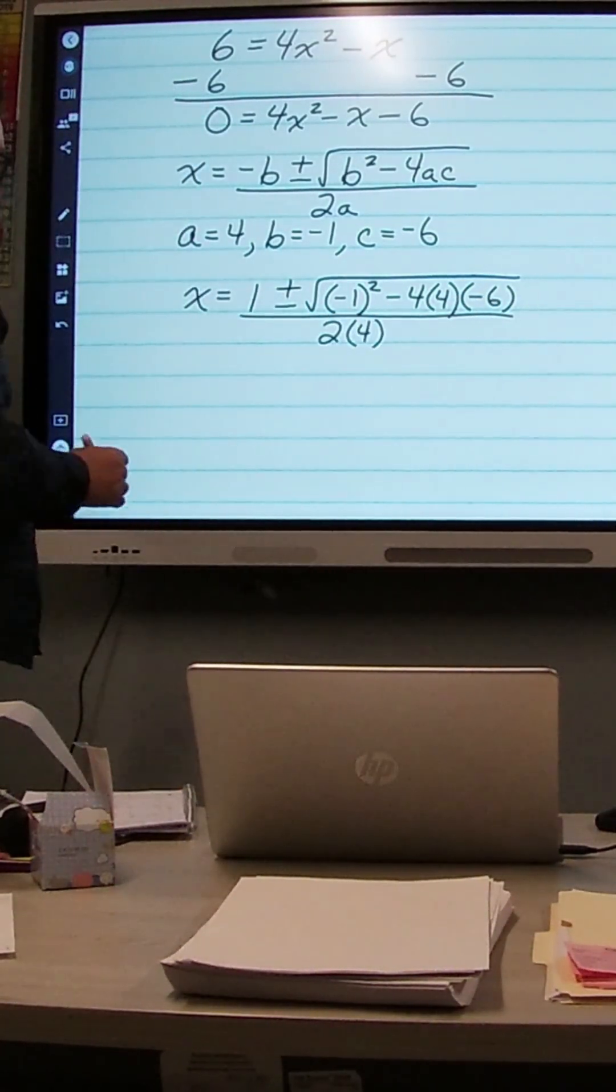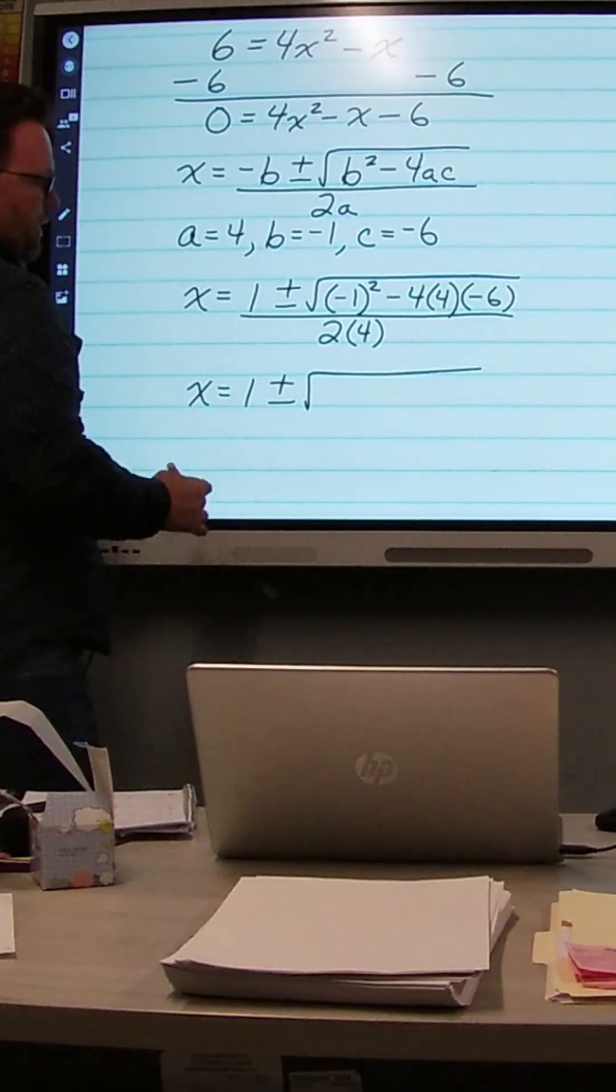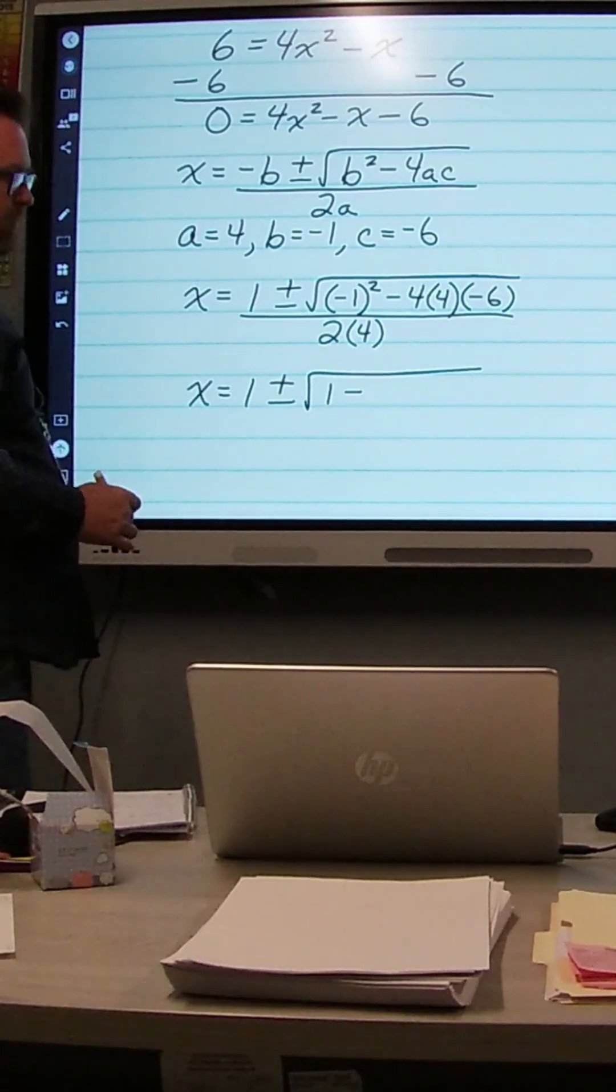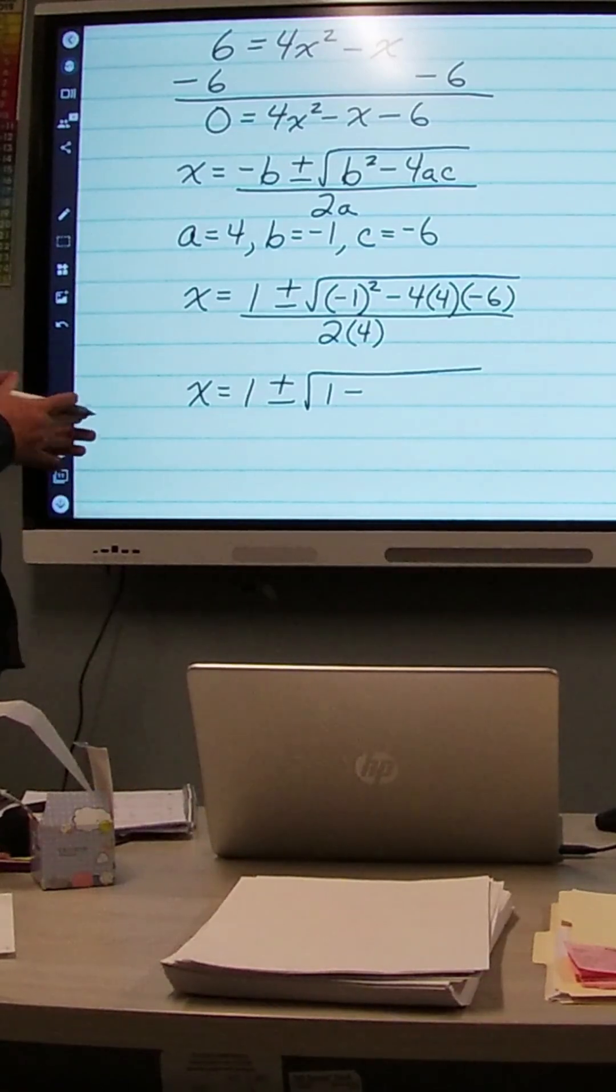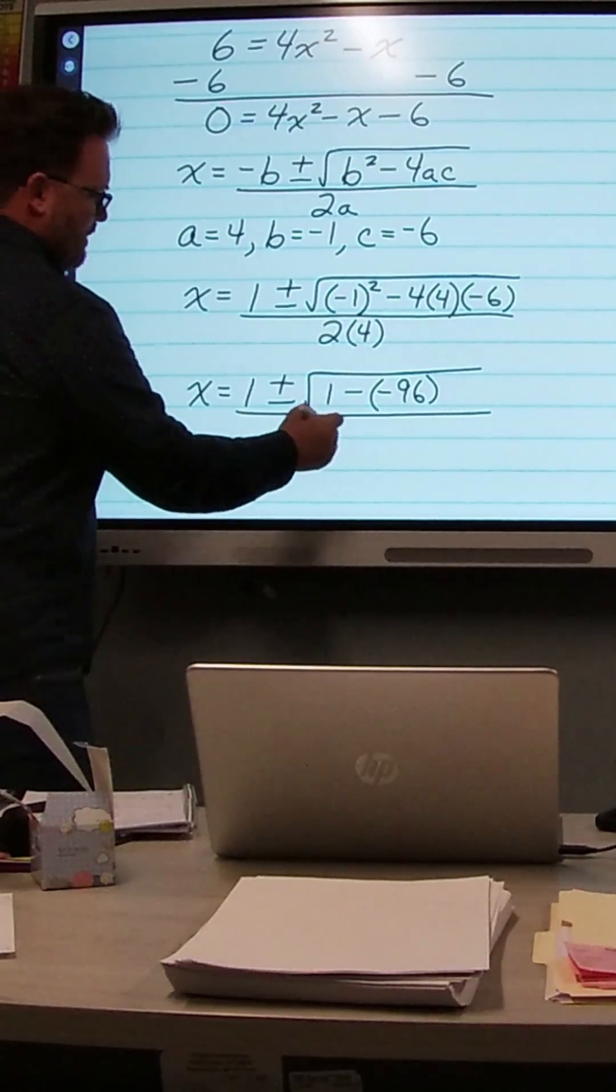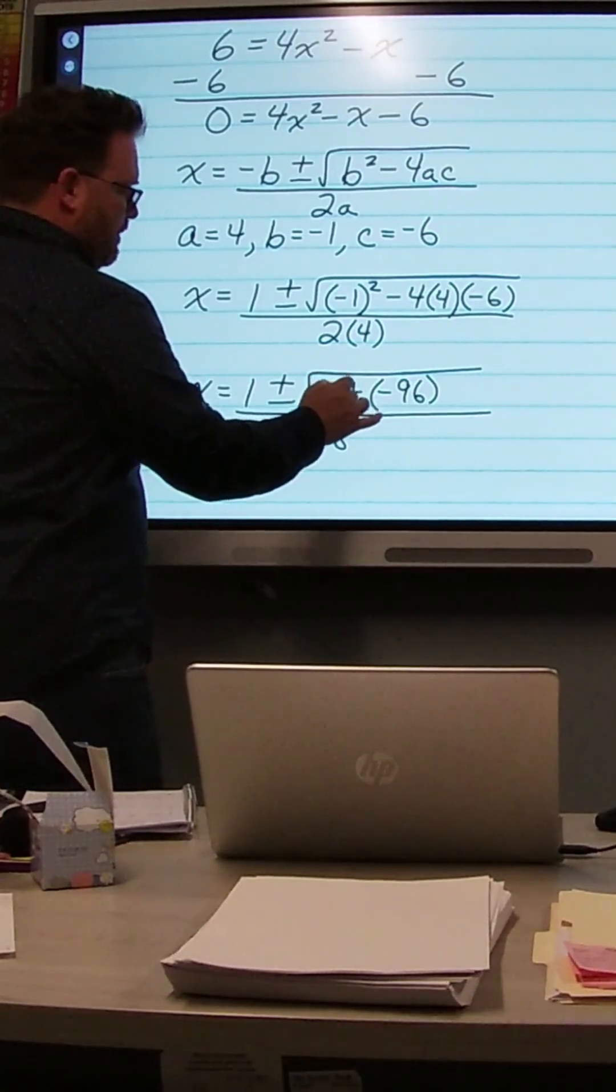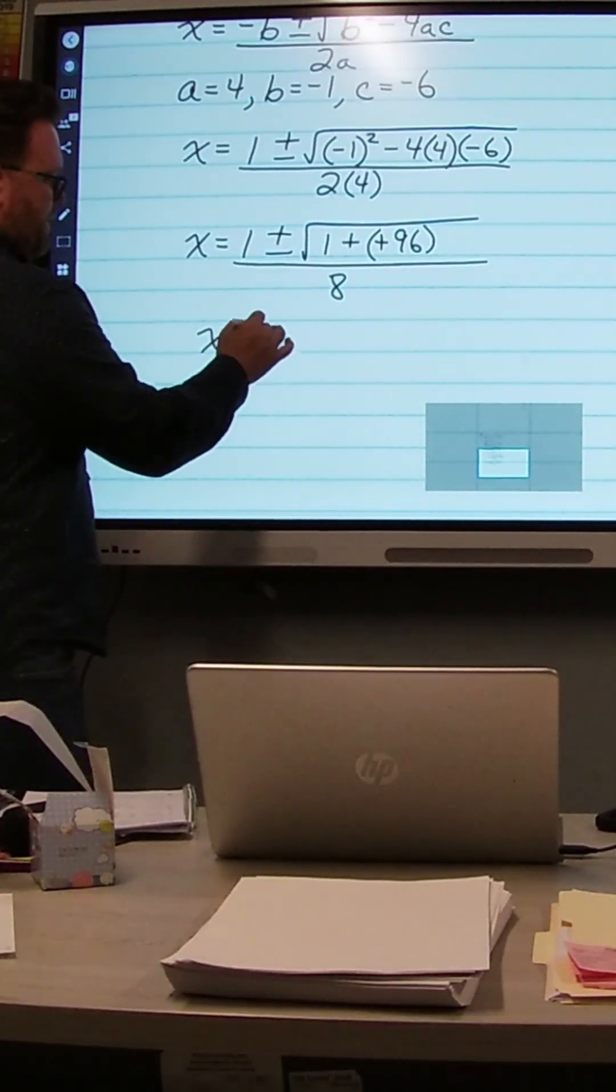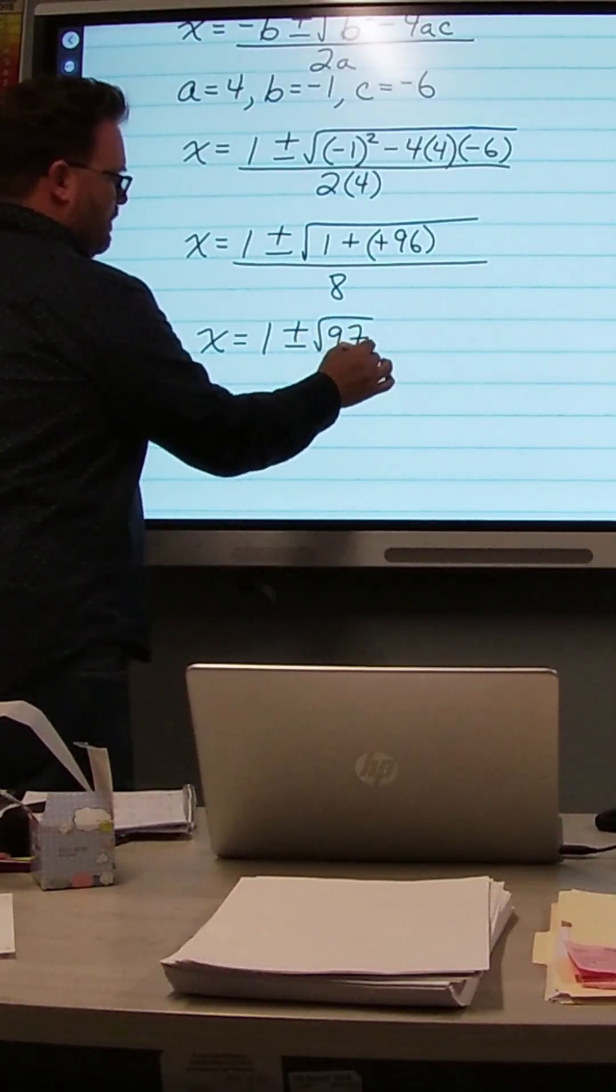So let's simplify this a bit. So we get x equals 1 plus or minus. Negative 1 squared is 1, as I mentioned before. Minus 4 times 4 is 16. Minus 16 times negative 6 is going to be negative 96. And that's all over 2 times 4, which is 8. Now notice here we're subtracting a negative. Subtracting a negative is like adding a positive. So I'm going to change those both to positives. And I'm going to write this as x equals 1 plus or minus the square root of 97 over 8.